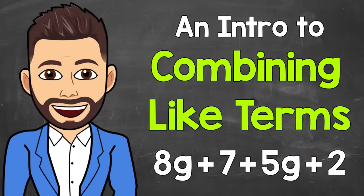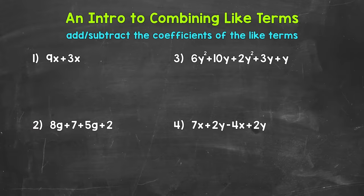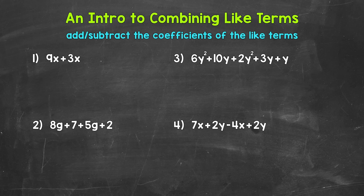Welcome to Math with Mr. J. In this video, I'm going to go through an introduction to combining like terms. Remember, like terms are terms with the same variables to the same powers. When we combine like terms, we look for any like terms in the given algebraic expression and combine them into one term. By combining like terms, we can simplify expressions — that just means we can rewrite the original expression in a simpler and easier way to understand and work with.